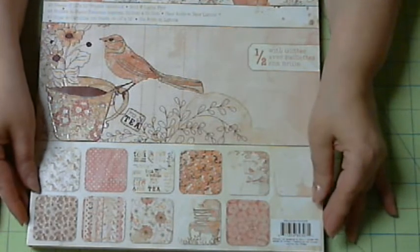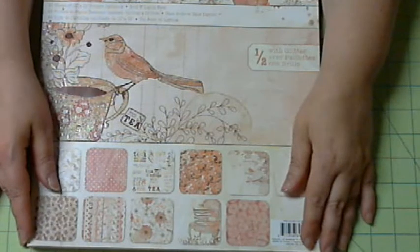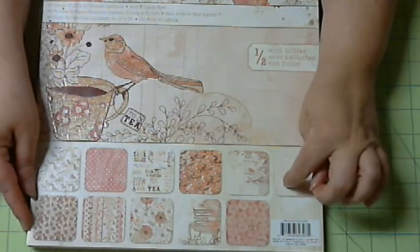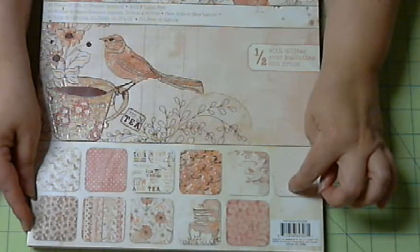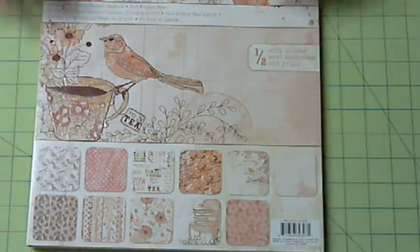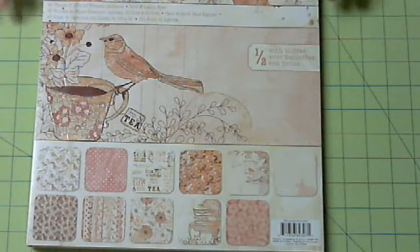So let me show you what I did. I used this paper stack, the Garden Tea Party stack by DCWV. I just thought it was cute for a mini teapot mini, so let me show you what I made and I'm gonna zoom in a little bit. Okay, so here's my mini.